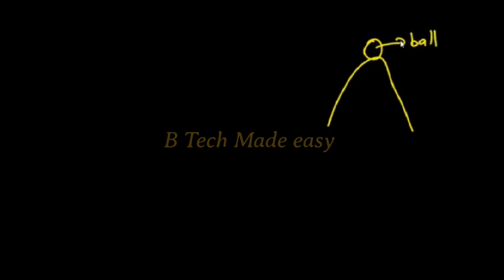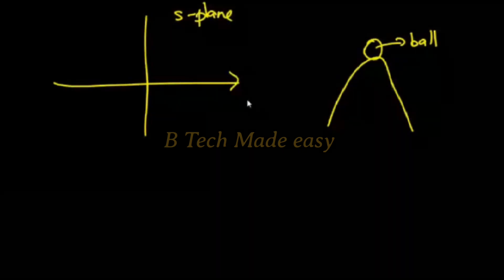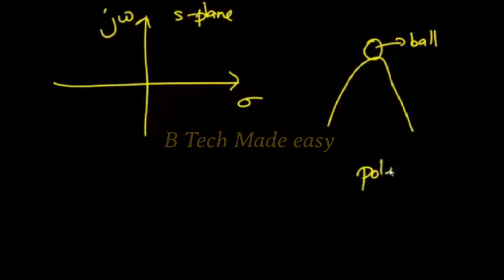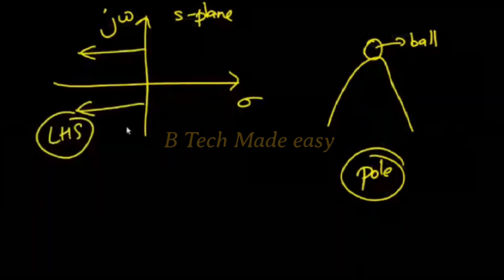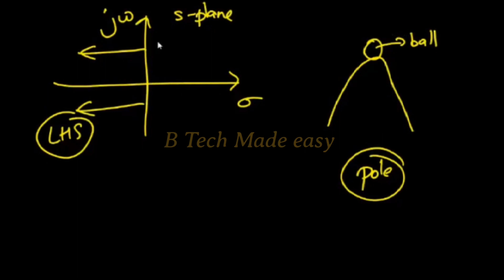If the system is stable, that is the main priority. The accuracy and speed of response depend on stability. Stability is of prime importance — a system can be stable or unstable. The stability is determined by the pole location in the s-plane. The s-plane consists of sigma and j-omega axes. The pole location in the closed-loop transfer function determines whether the system is stable or unstable.